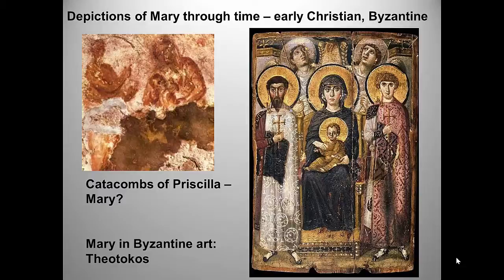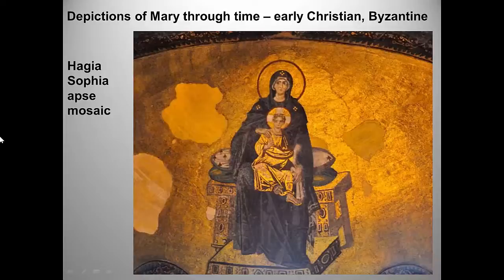Like the Byzantine Christ Pantocrator, this enthroned Mary is a force to be reckoned with, as is her stern, upright, miniature adult son. The gold background and halo emphasize her holy, otherworldly qualities. The later Byzantine post-iconoclasm mosaics of Mary and Jesus from Hagia Sophia likewise show a regal, unemotional, majestic Mother of God. Really, Mary is an empress, a fitting companion for Christ Pantocrator.